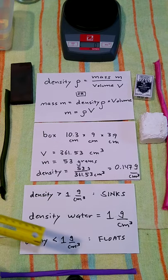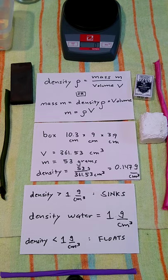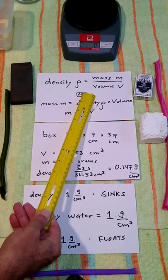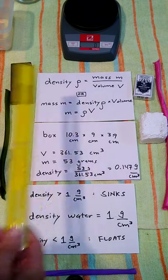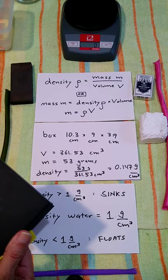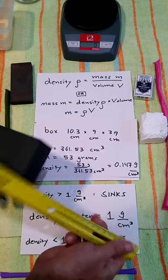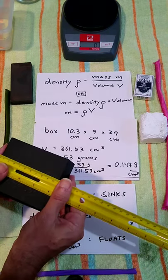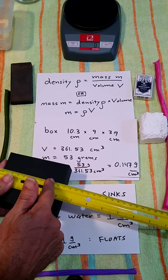In this video I will be introducing the concept of density. Density is mass divided by volume, and I'll be using that to calculate the density of this particular box here. This box has a length of about 10.3 centimeters.